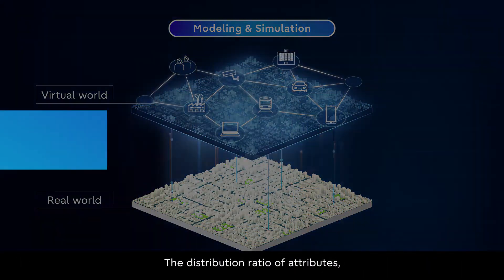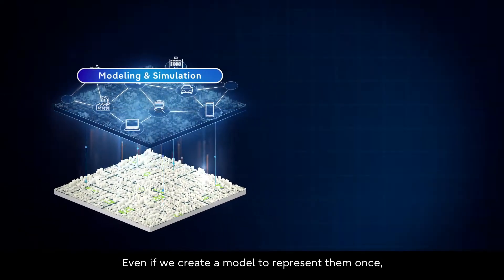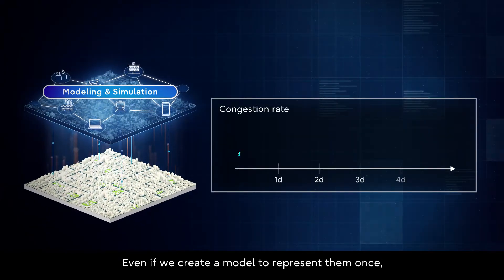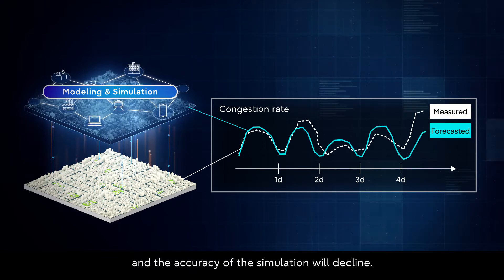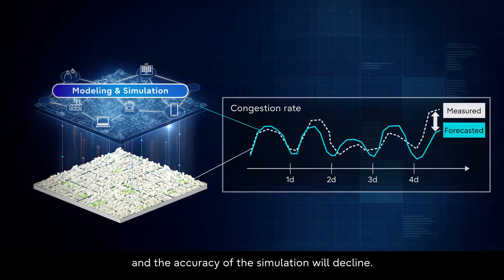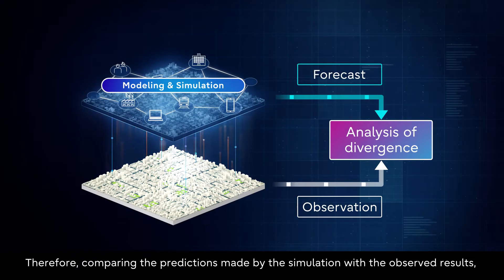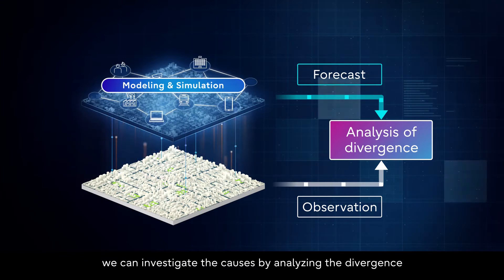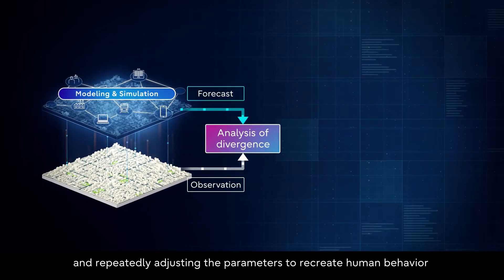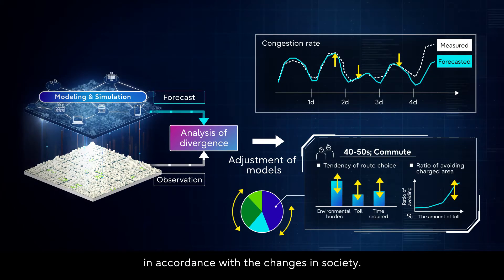The distribution ratio of attributes, thoughts, and actions of people in a city change on a daily basis. Even if we create a model to represent them once, it will soon deviate from the current situation and the accuracy of the simulation will decline. Therefore, by comparing the predictions made by the simulation with the observed results, we can investigate the causes by analyzing the divergence and repeatedly adjusting the parameters to recreate human behavior in accordance with the changes in society.